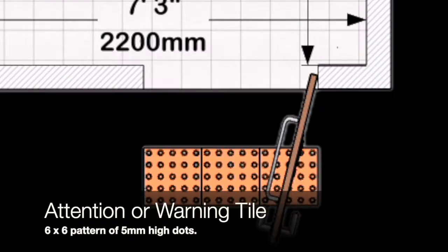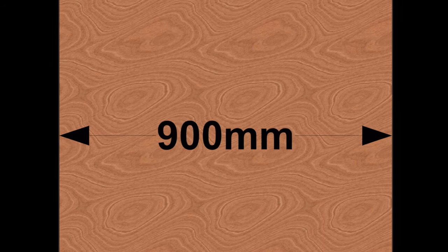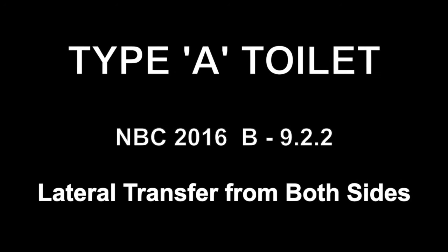Tactile Ground Surface Indicators (TGSI): tactile warning tiles should be placed 300mm from the threshold of the door. Door width: the door width, whether it is a sliding door or an opening door, is a minimum of 900mm. On the inside of the door there should be a horizontal grab rail 900mm from the floor and the door handle 1 metre from the floor.